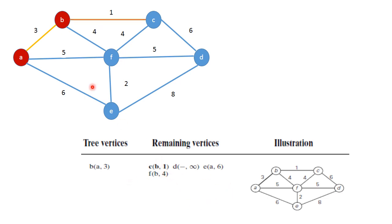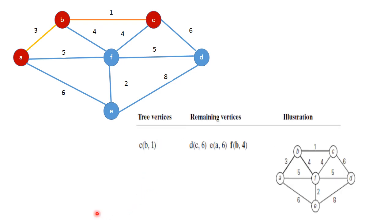Next, I have selected the B-to-C edge because out of the remaining vertices, C gives the minimum edge distance. This line is darkened in the illustration. C is added into the tree vertices. Now A, B, and C are in the tree vertices.